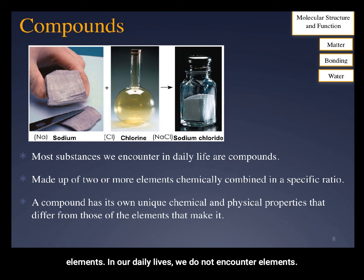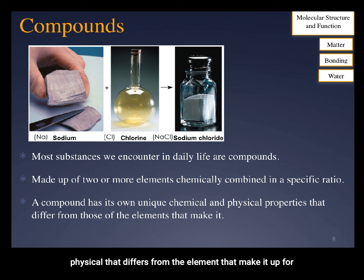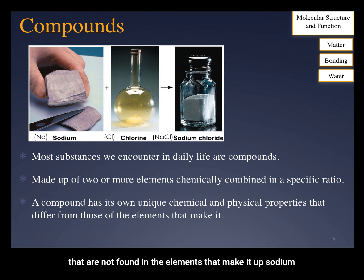In our daily lives, we do not encounter elements. We encounter compounds, which are substances made up of two or more elements combined in a specific ratio with chemical bonds. Compounds have a unique property, both chemical and physical, that differs from the elements that make them up. For example, sodium chloride — table salt — has unique properties that are not found in the elements that make it up: sodium and chlorine.